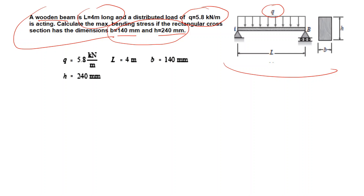When you have a distributed load q along the length L, this can be replaced by a single load q times L, and your support forces will be q times L over 2 on both sides.